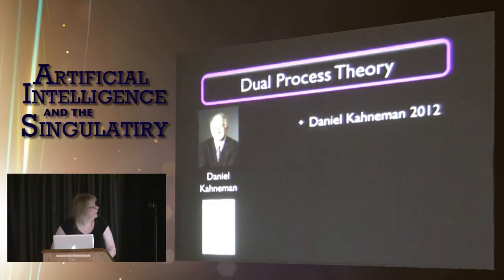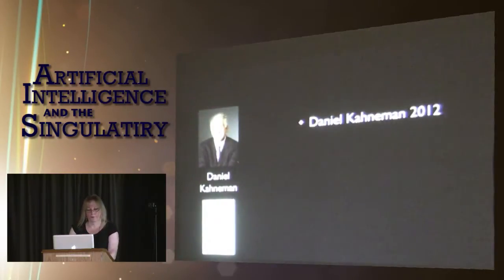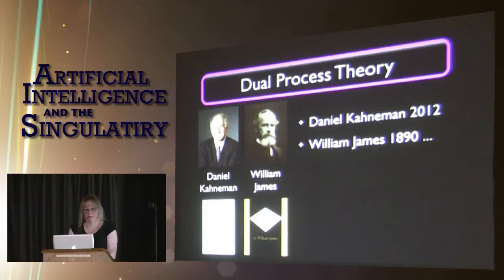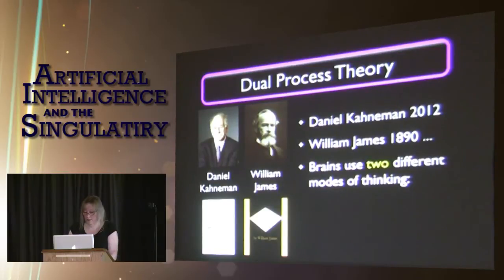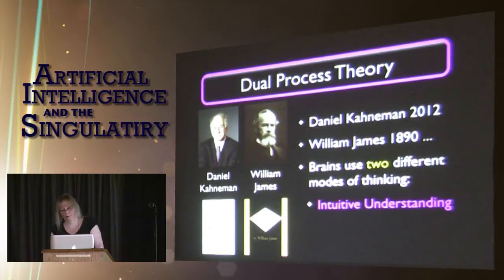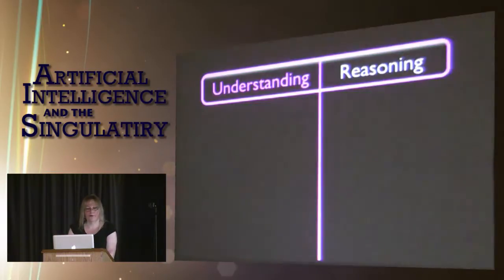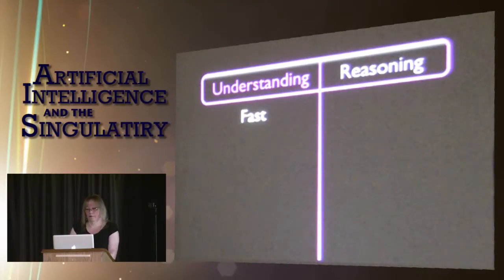This is Daniel Kahneman. He wrote a book called Thinking Fast and Slow, and it's mostly about dual process theory. He wasn't the first one to talk about that — many people have talked about it ever since William James in 1890. The idea is very simple: brains use two different modes of thinking. They use intuitive understanding and logical reasoning, and they're different. Understanding is fast, and reasoning is slow — hence the title of Kahneman's book.